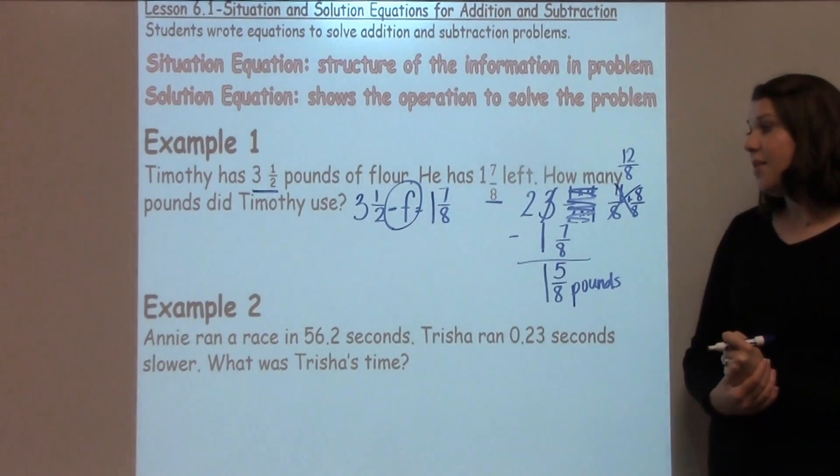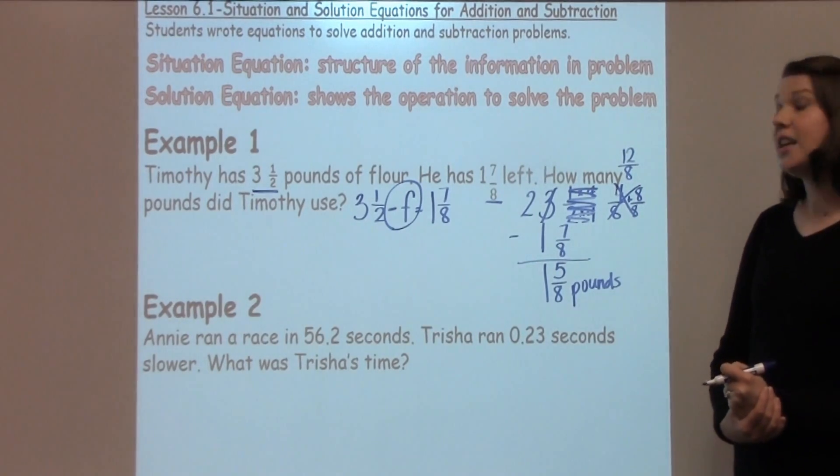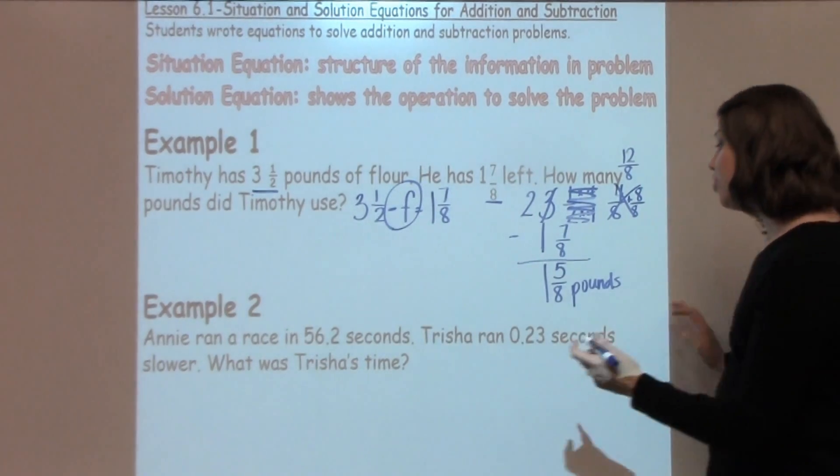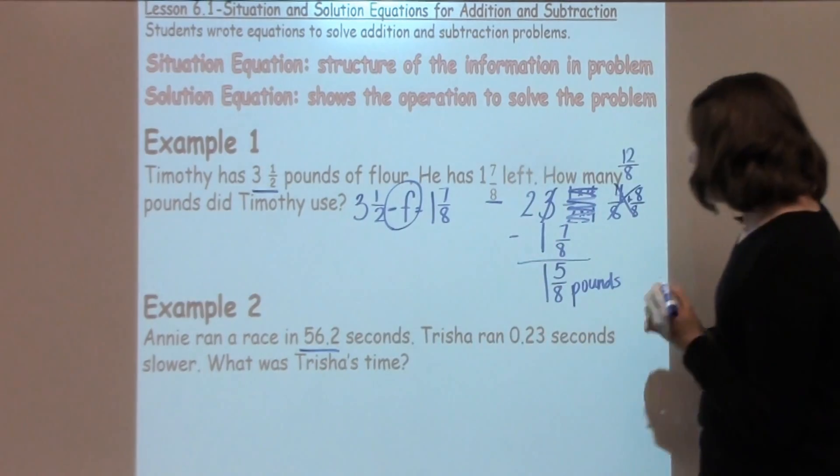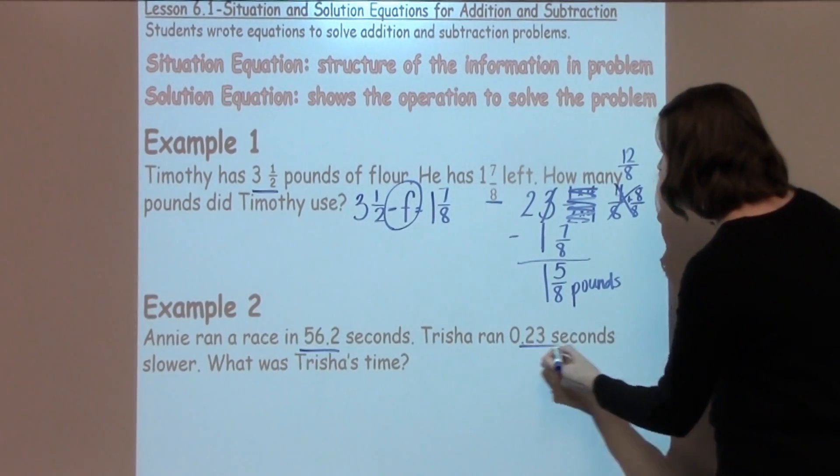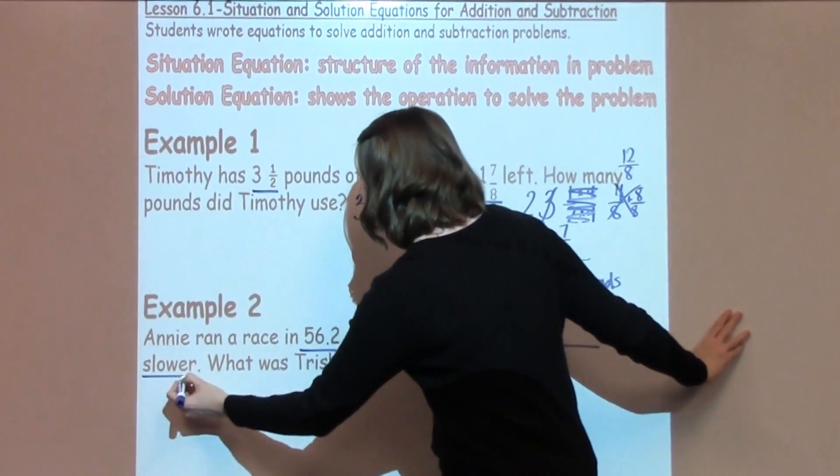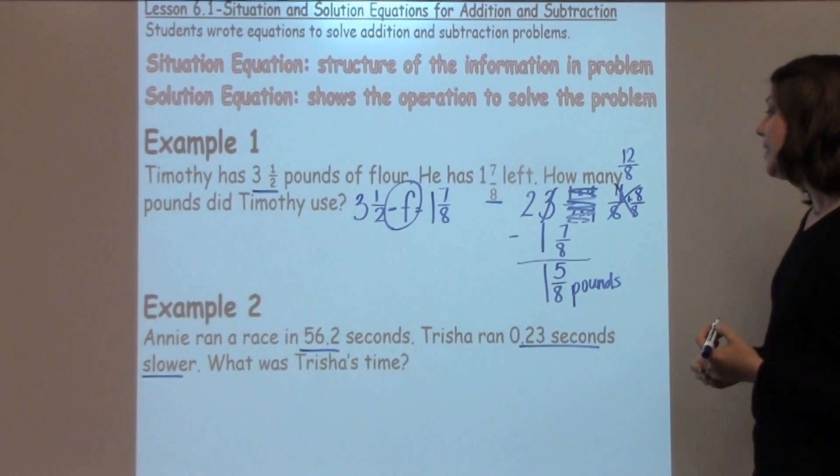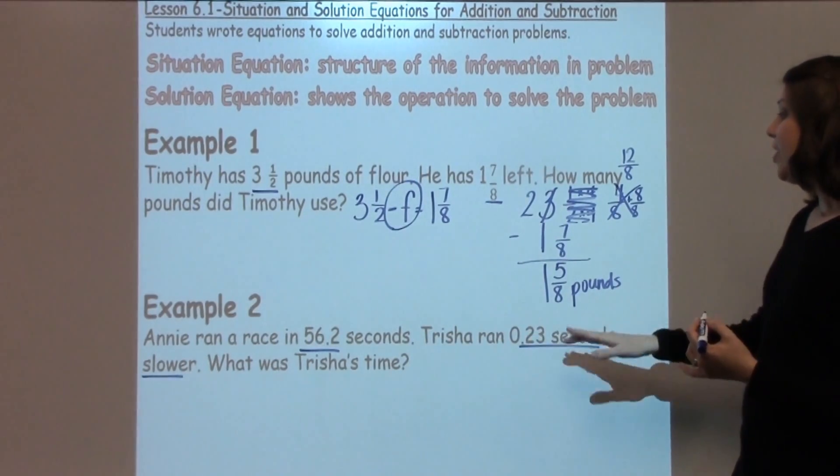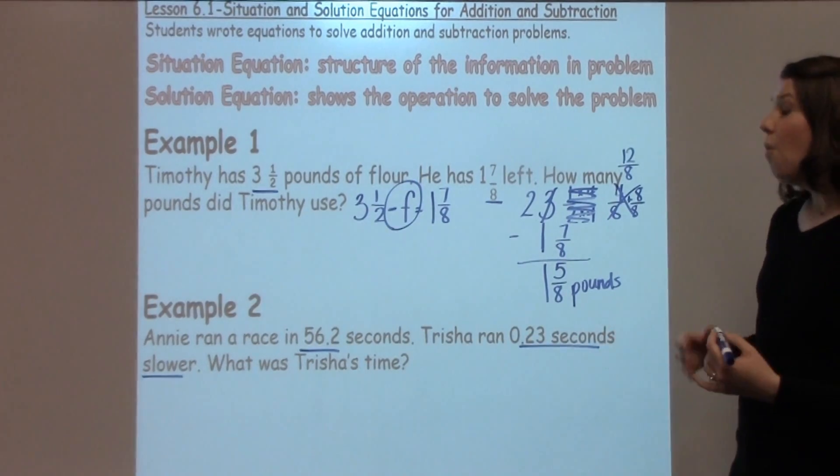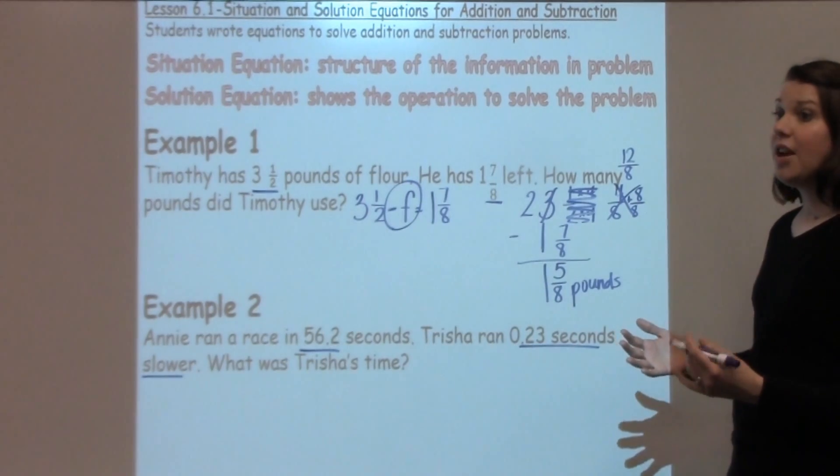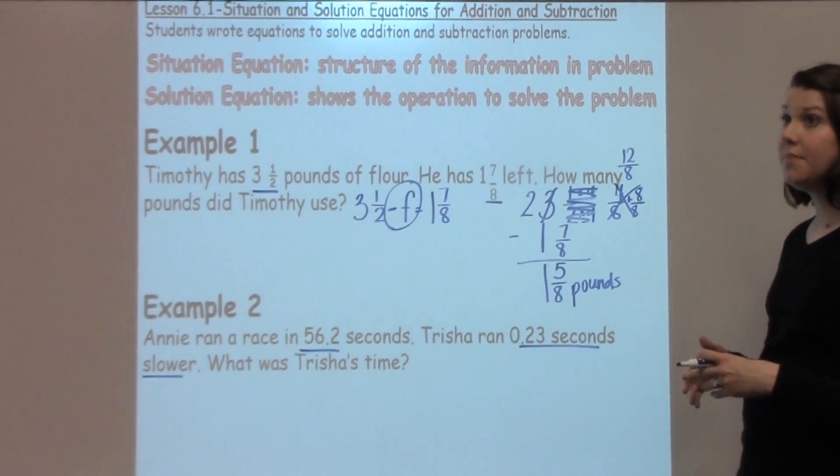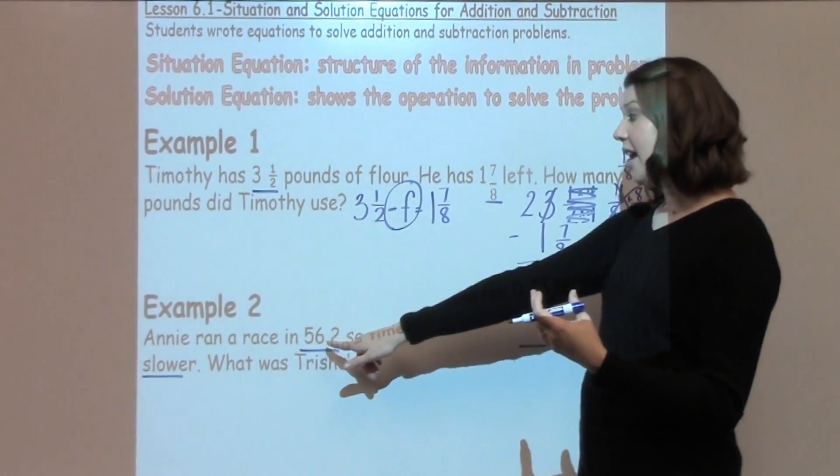For Example 2, it says Annie ran a race in 56.2 seconds. Trisha ran 0.23 seconds slower. What was Trisha's time? In this problem, we really have to stop and think about the language being used because it says Trisha ran 0.23 seconds slower. When I think about slower, I know that's going to make her have a time that is going to be longer than Annie's time.